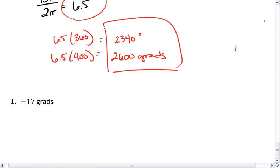Lastly, let's look at negative 17 grads. This means I have negative 17 four hundredths of a circle. I can find the decimal equivalent, which is negative 0.0425. This means I have 4.25% of the circle.